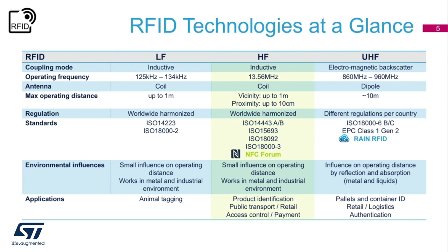In the center of the chart you will find HF or high frequency, which operates at 13.56 MHz. This is near field communication, known simply as NFC, and is what we will explore further during this webinar. Most new solutions will either be ISO 14443 or ISO 15693.